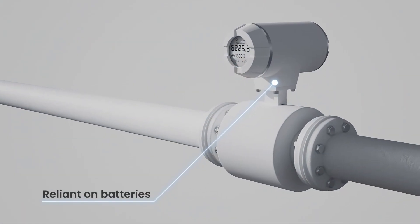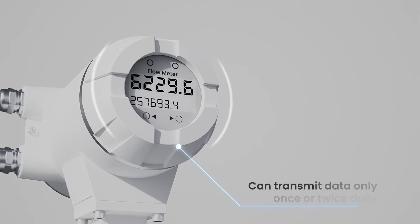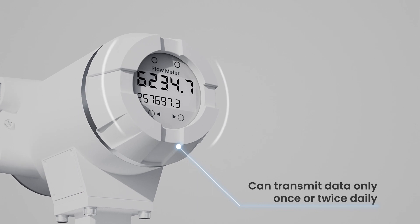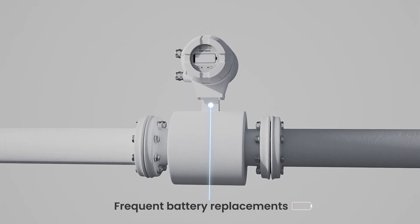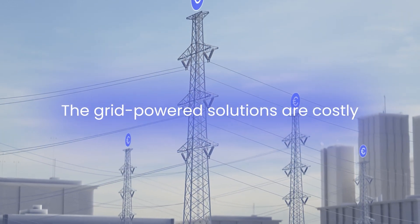However, current monitoring systems, reliant on batteries, can transmit data only once or twice daily and demand frequent battery replacements. Meanwhile, grid-powered solutions are too costly for mass deployment.